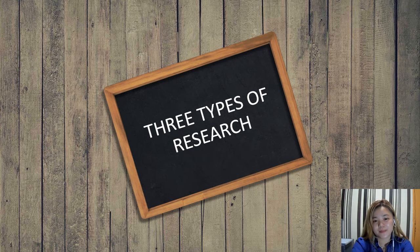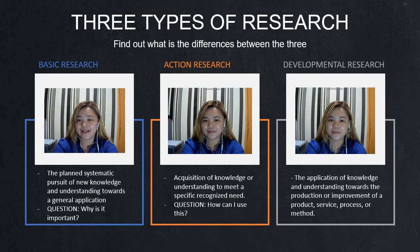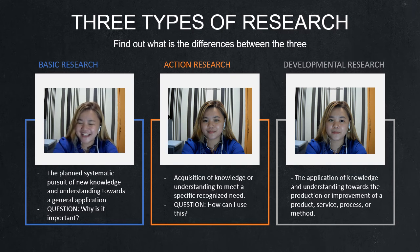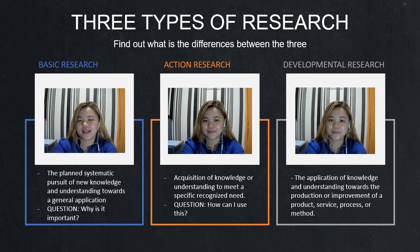Now let's move on to the three types of research and their differences. The first is Basic Research — it is the planned, systematic pursuit of new knowledge and understanding towards a general application. The question it answers is: Why is it important? For example, you want to know the importance of research in the lives of Filipinos. This type is used by teachers, psychologists, and similar professionals.